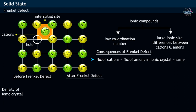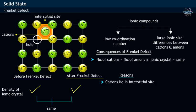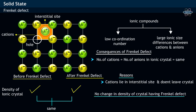The density of the ionic crystal before and after Frenkel defect remains the same and does not change. This is because in Frenkel defect, the cation lies in the interstitial site without leaving the ionic crystal. Since there is no change in density even after dislocation of the cation, it is also called a dislocation defect.